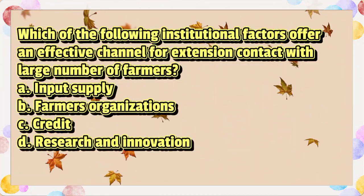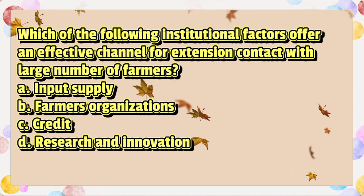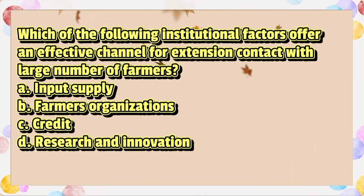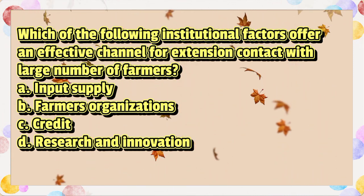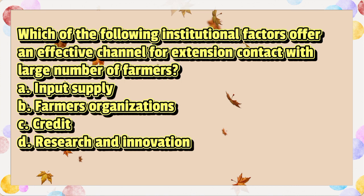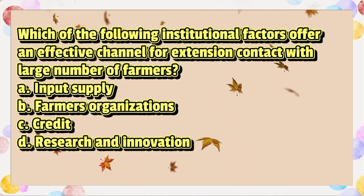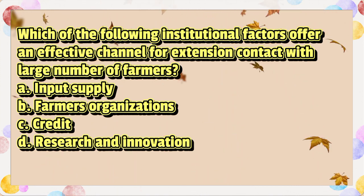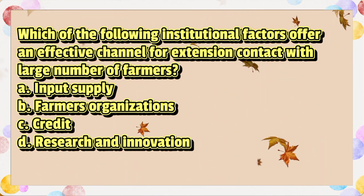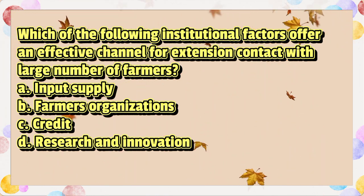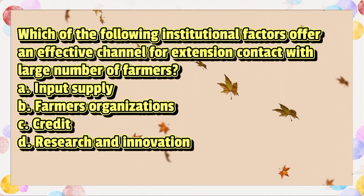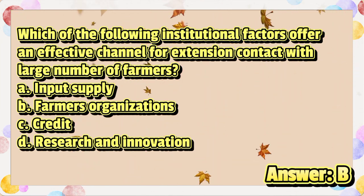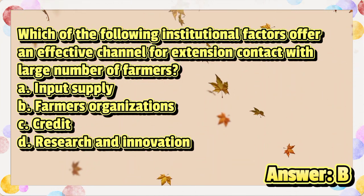Which of the following institutional factors offers an effective channel for extension contact with a large number of farmers? A. Input supply. B. Farmers organizations. C. Credit. D. Research and innovation. The answer is letter B.